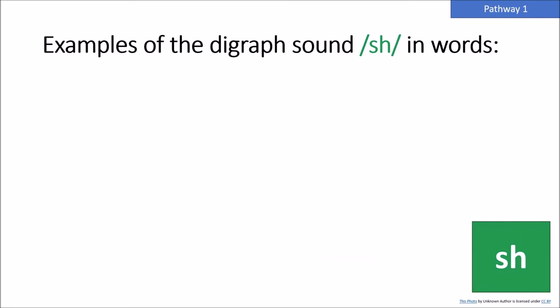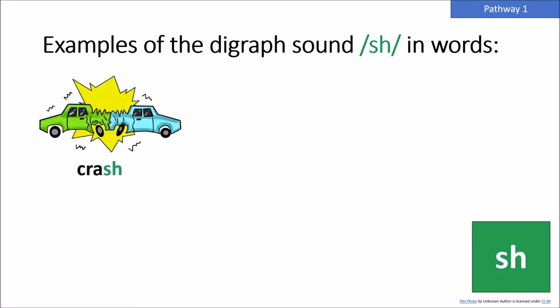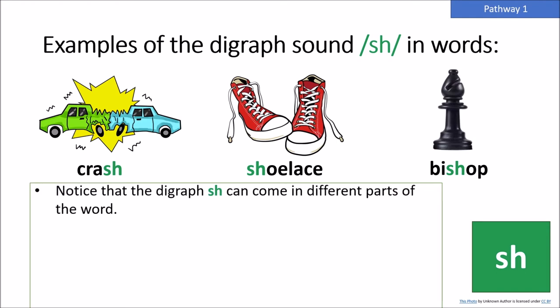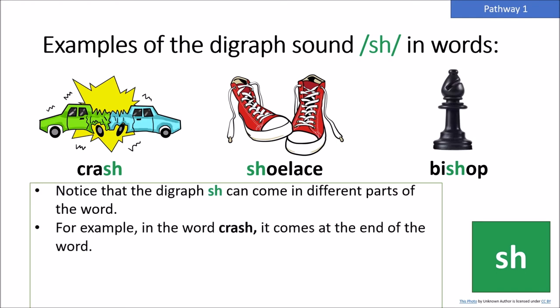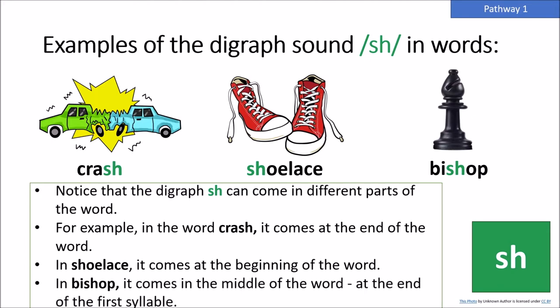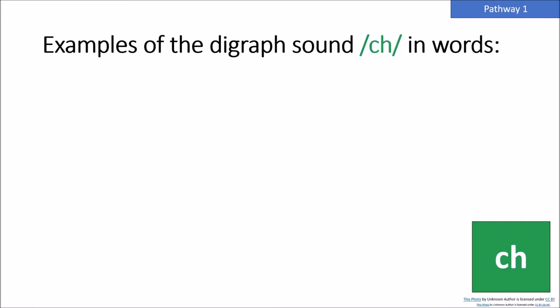Examples of the digraph sound 'shh' in words: crash, shoelace, bishop. Notice that the digraph SH can come in different parts of the word. For example, in the word crash, it comes at the end of the word. In shoelace, it comes at the beginning of the word. And in bishop, it comes in the middle of the word at the end of the first syllable.